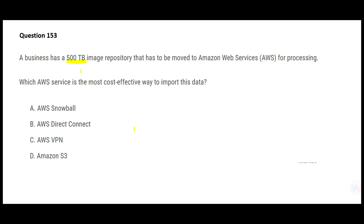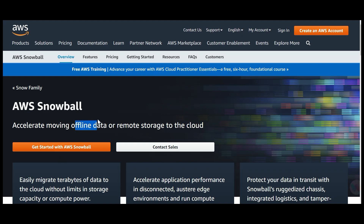Next question: you have a huge amount of data — 500 terabytes of images — to move. You cannot move that over the internet. Direct Connect is a network connection between on-premises and cloud, but you cannot move this much data through it cost-effectively; Direct Connect itself is expensive like a Mercedes-Benz. VPN will not work — it will die trying to move 500 terabytes. S3 is the target destination, not the means to move the data.